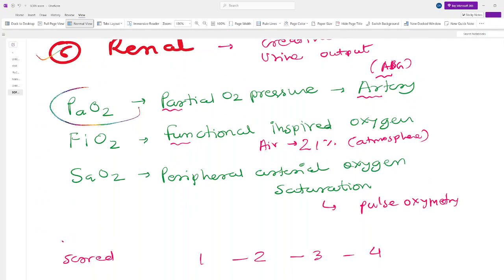What is PaO2? PaO2 is partial oxygen pressure - the oxygen pressure inside your artery. It is measured by doing ABG, that is arterial blood gas analysis. FiO2 is functional inspired oxygen - in the air it is 21%. SaO2 is what you measure by pulse oximetry.